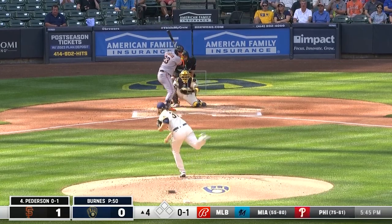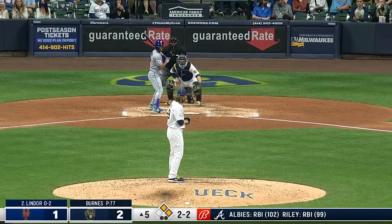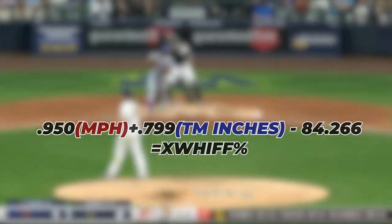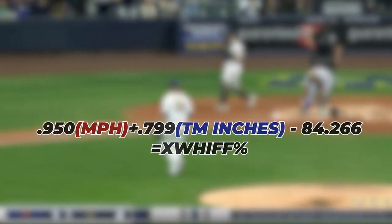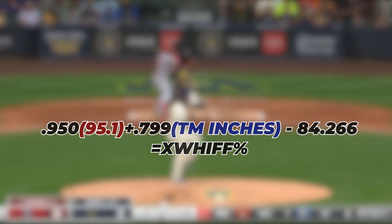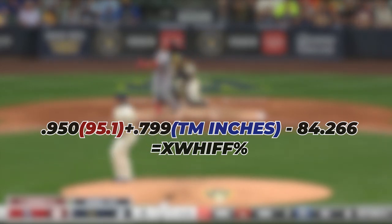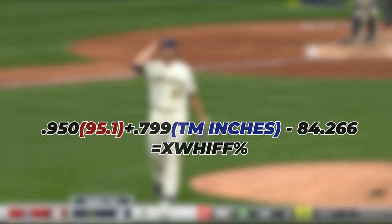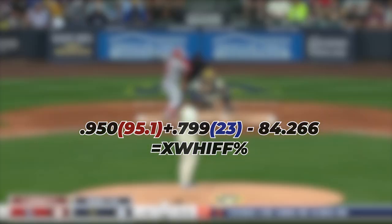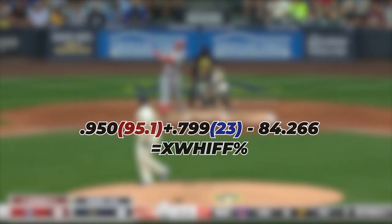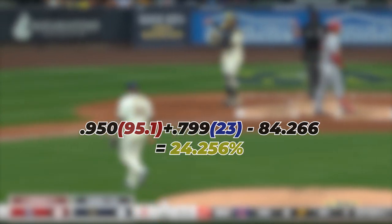To show how this equation works, we will use Corbin Burns as an example since he threw the most cutters in the MLB in 2022. Corbin's cutter was 95.1 mph, so we will put that into the equation in the miles per hour spot. His cutter had 23 inches of total break, so that will also go into the equation. Once it is solved, we get an expected whiff percentage of 24.256.